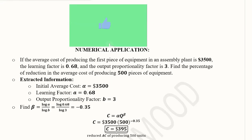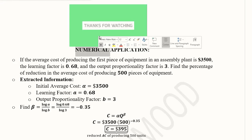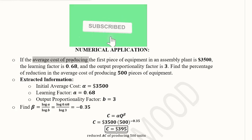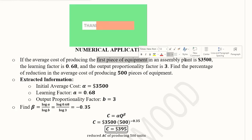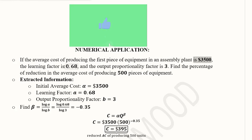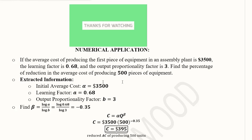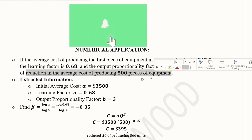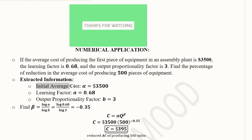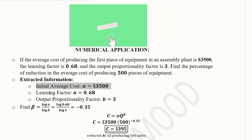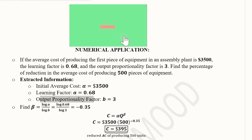For a numerical application: the average cost of producing the first piece of equipment in an assembly plant is $3,500 (alpha). The learning factor is a = 0.68 and the output proportionality factor is b = 3. We are asked to find the percentage reduction in average cost when producing the 500th piece of equipment.